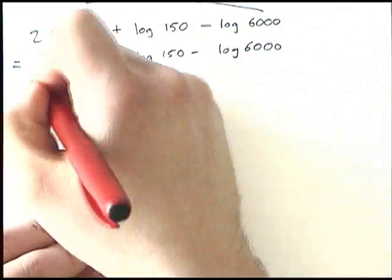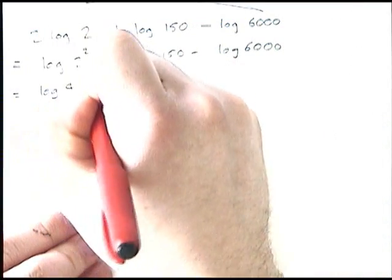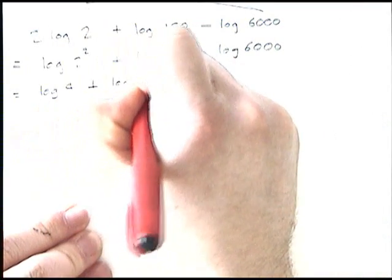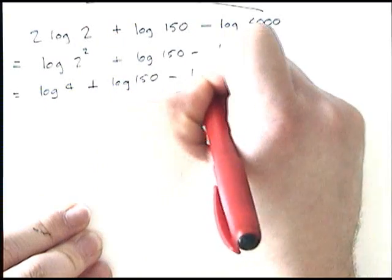Now we all know 2 squared simplifies to 4. Log 4 plus log 150 minus log 6000.